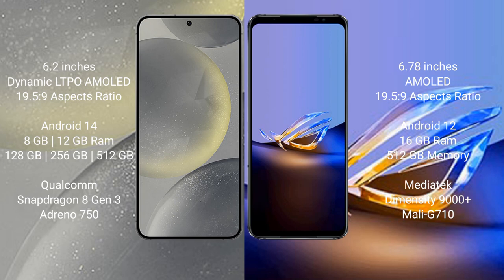The Samsung Galaxy S24 runs on the Android 14 operating system. The ASUS ROG Phone 6D Ultimate runs on the Android 12 operating system. The Samsung Galaxy S24 comes with 8GB to 12GB RAM and 128GB, 256GB, or 512GB internal storage.